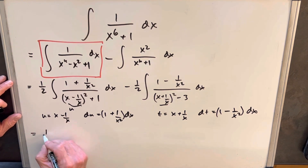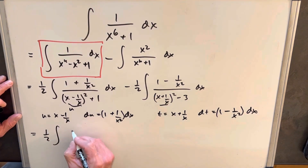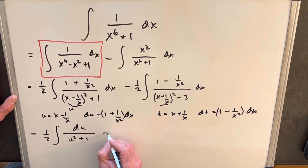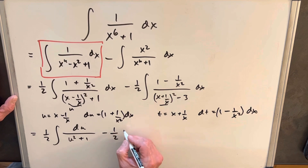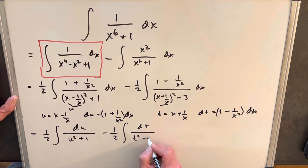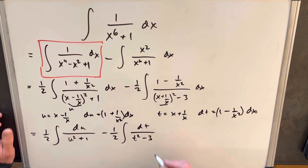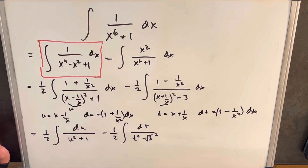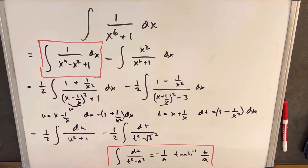Now we'll make these substitutions. We're going to have 1/2 du in the numerator over u squared plus 1, which is nice for arctan. And then we'll have minus 1/2 dt over t squared minus 3. For the minus 3, let's write it as square root of 3 squared, and that's going to lead us to use the hyperbolic inverse tangent formula.